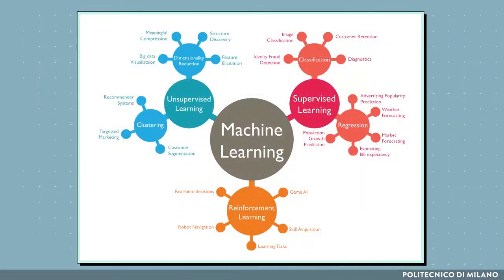Machine learning techniques can be roughly divided into three main categories: supervised learning, unsupervised learning, and reinforcement learning.